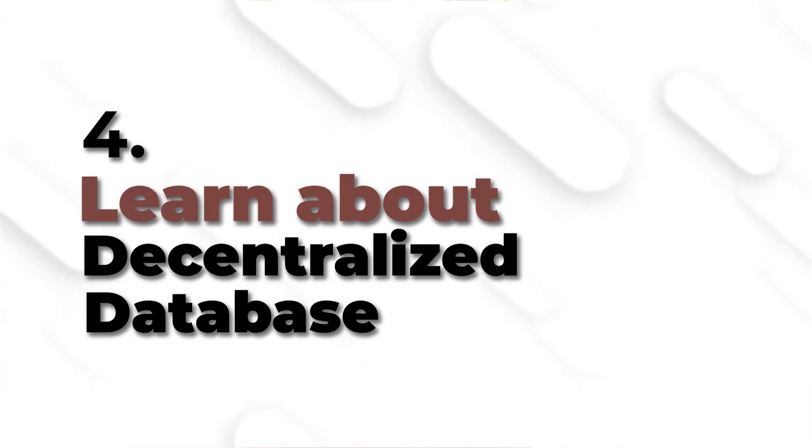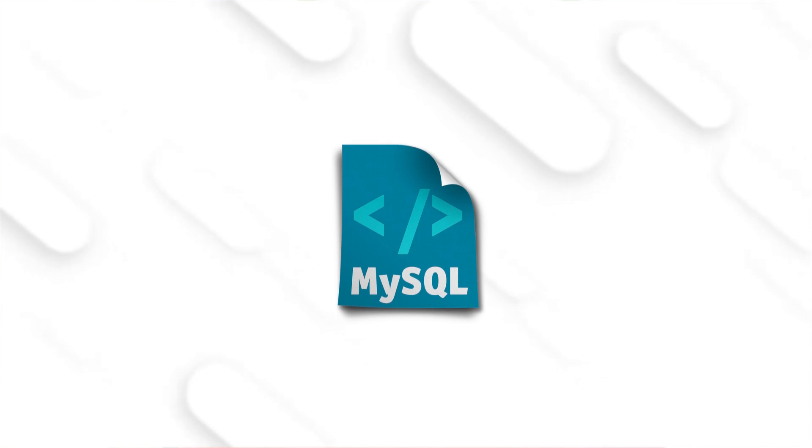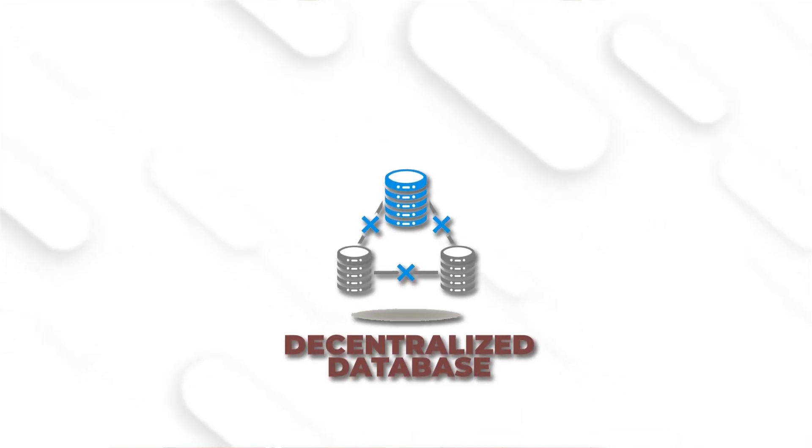The next thing you need to know is decentralized databases. In web3 we don't use the regular MySQL or SQL databases used in web2 — we use decentralized databases to store information. Things like pictures, music files, and media files in general can be stored in these decentralized databases. The most popular ones are IPFS and Pinata. Learn how to use them, how to integrate them in your application. They will give you a CID, and you can use it in your dApp to retrieve that particular data when you need it.